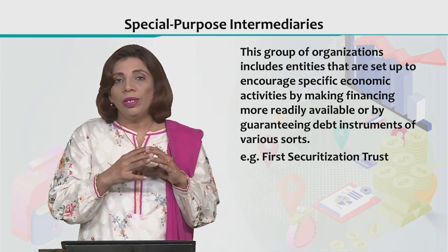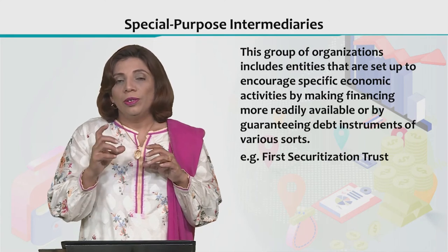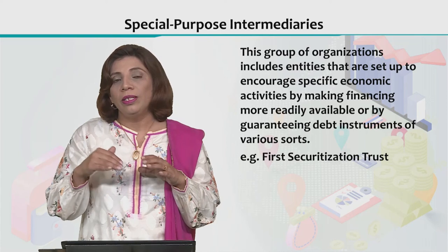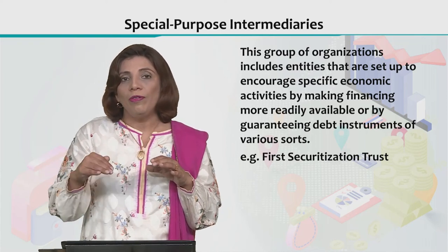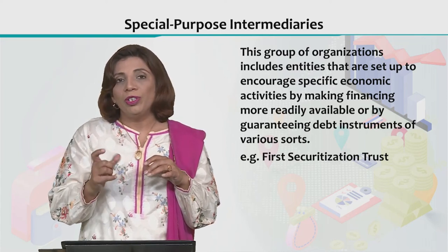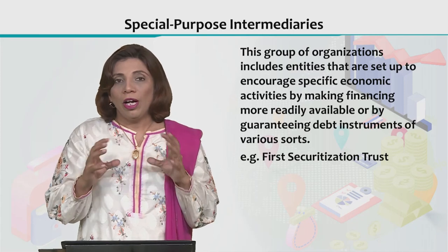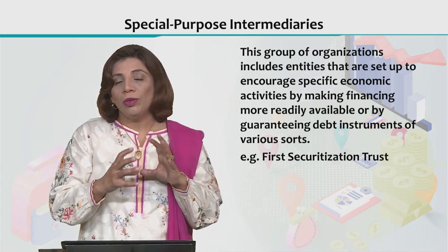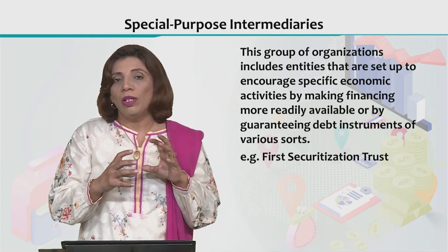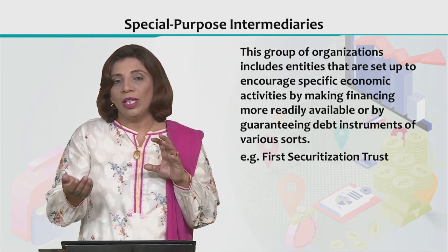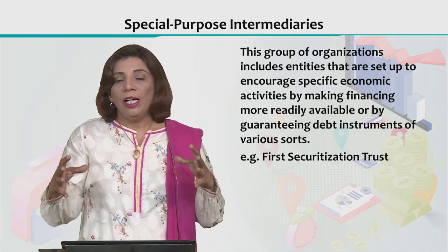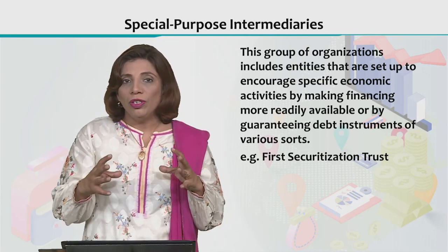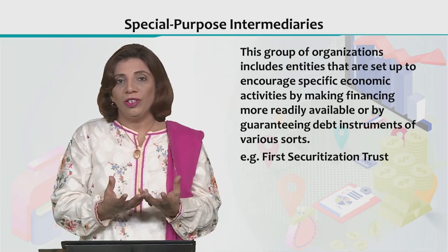So, the government can regulate the financial structure through the central bank, and then there are different types of institutions called special purpose intermediaries. Together, there are several other organizations also which are called quasi-governmental organizations. Together, they help in regulating the financial structure and the financial institutions that form the financial structure.